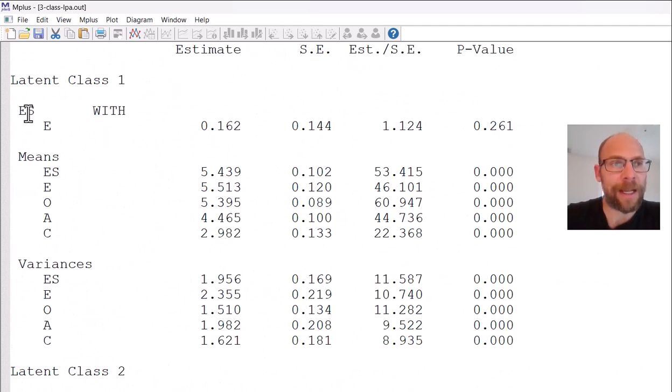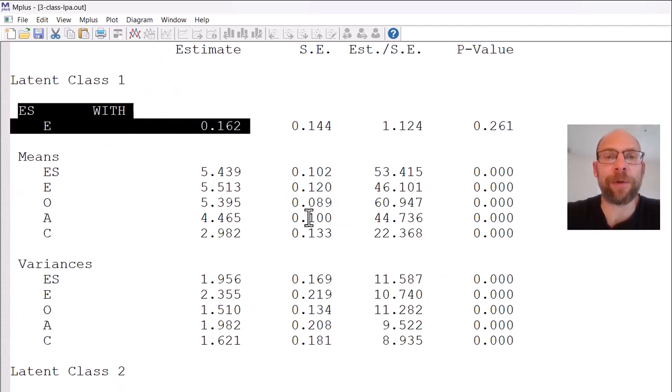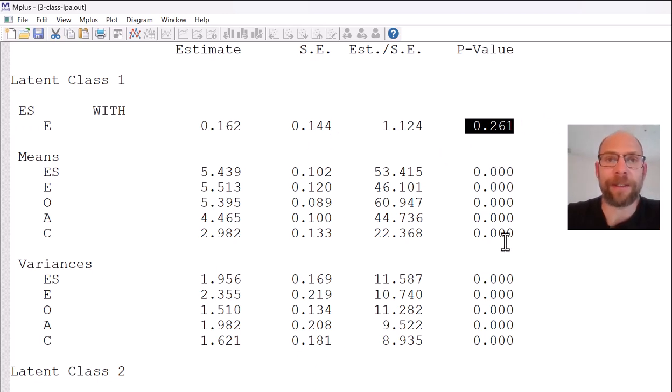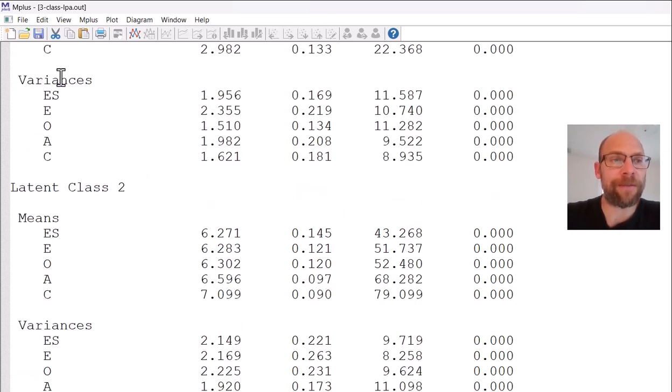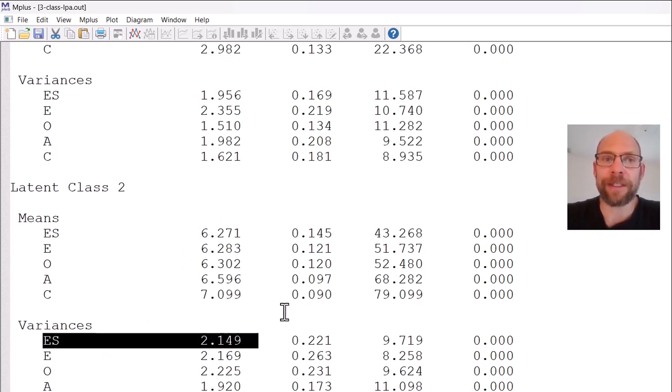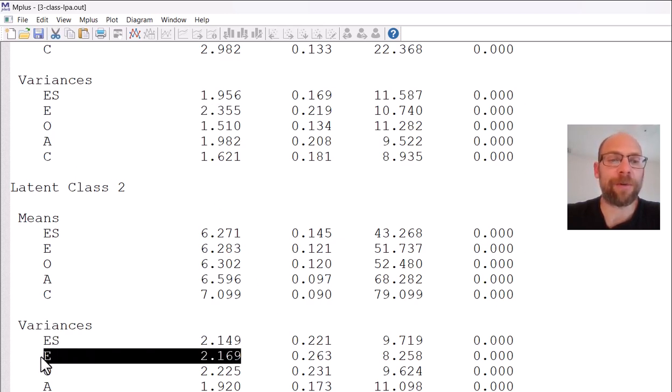You can see that now we have this within class association between emotional stability and extraversion here that we admitted in class 1. It's not significant, it doesn't make any sense. I didn't do this because it made sense, but only to show you how you would free up such a covariance. And then also you can now see that the variances are no longer constrained to be equal across classes. For example, emotional stability has now a variance estimate of 1.956 in class 1 and 2.149 in class 2. So the variance is now allowed to vary freely between classes and the same for extraversion. The variance estimates are now different between the classes.